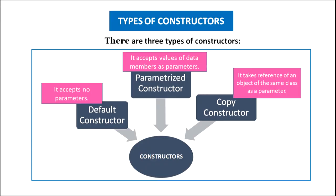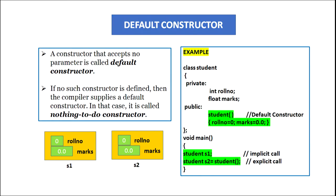Types of constructor. Usually there are three types of constructors: default constructor, parameterized constructor, and copy constructor. A default constructor accepts no parameters. A parameterized constructor accepts values of data members as parameters. A copy constructor also accepts a parameter, but in the case of copy constructor, the parameter is a reference to an object of the same class.